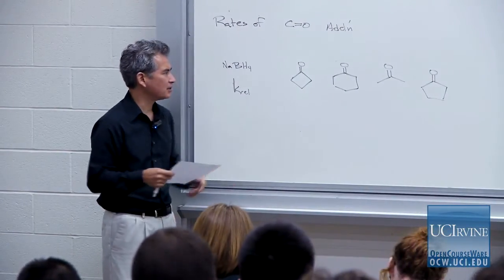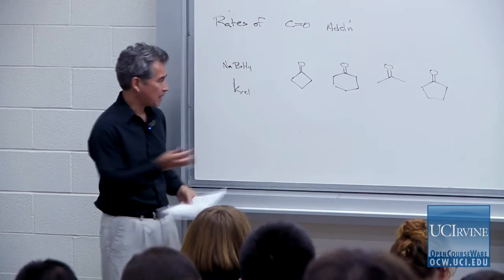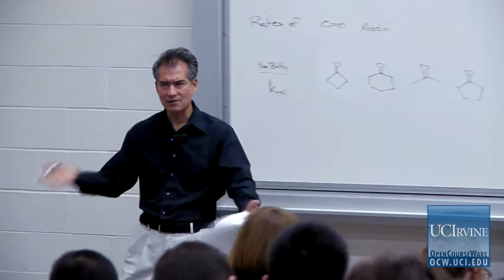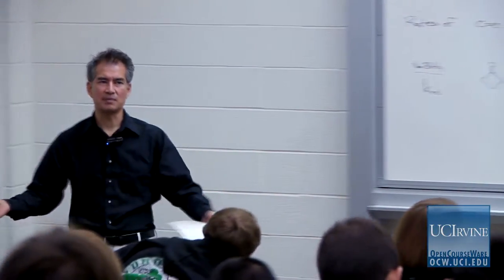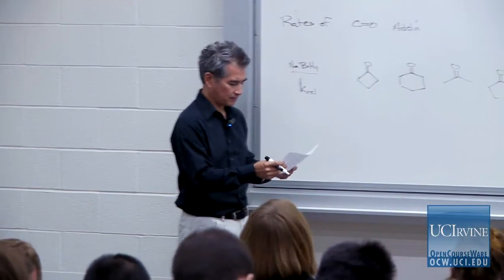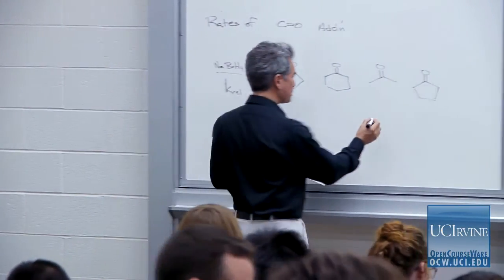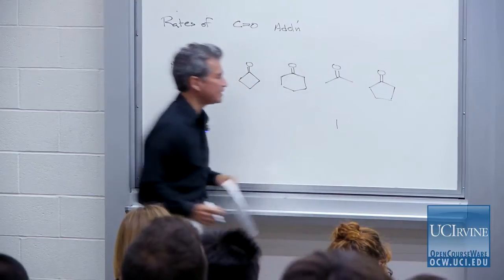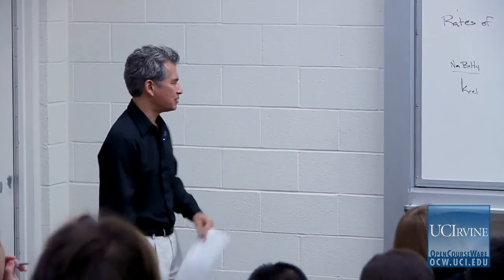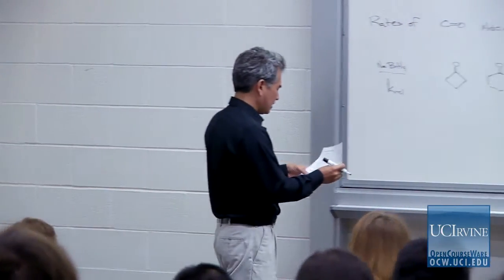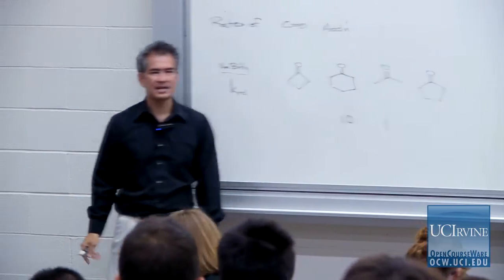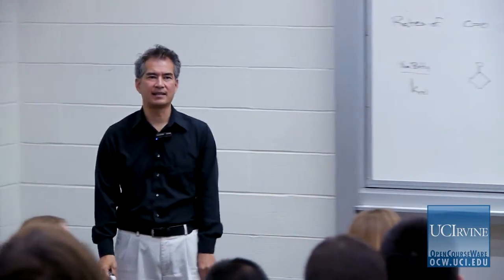This will give us a chance to look at the effects of rings and ring size. I'm going to give you a set of relative rates for reaction of sodium borohydride — it's a prototypical nucleophile with some ionic character. I'll assign a simple acyclic ketone, acetone, a relative rate of 1 so we can compare everything to it. Interestingly, cyclohexanone, a pretty common substrate, reacts about 10 times faster than an acyclic ketone.